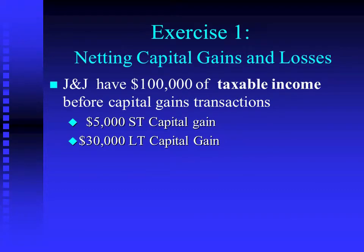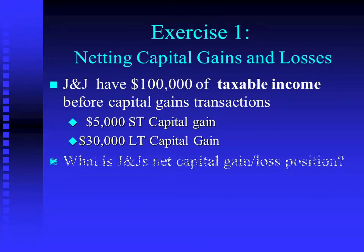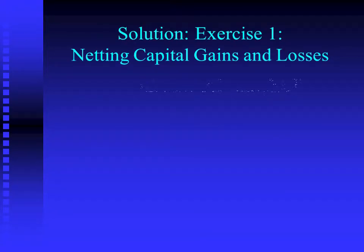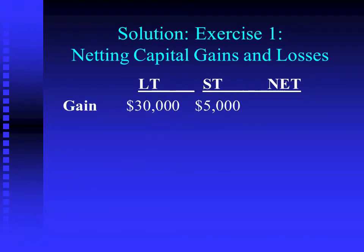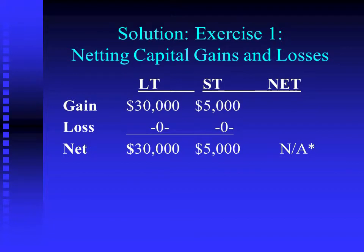Here's the first example — a nice simple one. We have one short-term capital gain and one long-term capital gain. We're going to separate our shorts and our longs, but you can see it's not going to be a very long sort. So we have a gain in each column, we have no losses for either column, but we still honor the game of netting down, because net long-term gains are a different animal than net short-term gains.